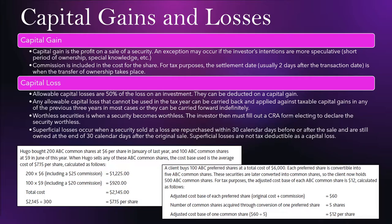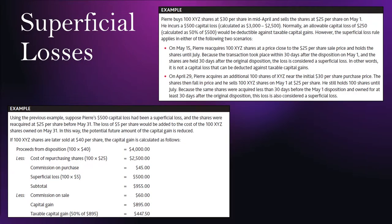Worthless securities — when a security becomes worthless, the investor must fill out a CRA form electing to declare the security worthless. It's also really important to understand superficial losses. These occur when a security is sold at a loss but is repurchased within 30 calendar days before or after the sale and is still owned. You do not want to repurchase a security you sold at a loss — it will be a superficial loss and is not tax deductible as a capital loss.